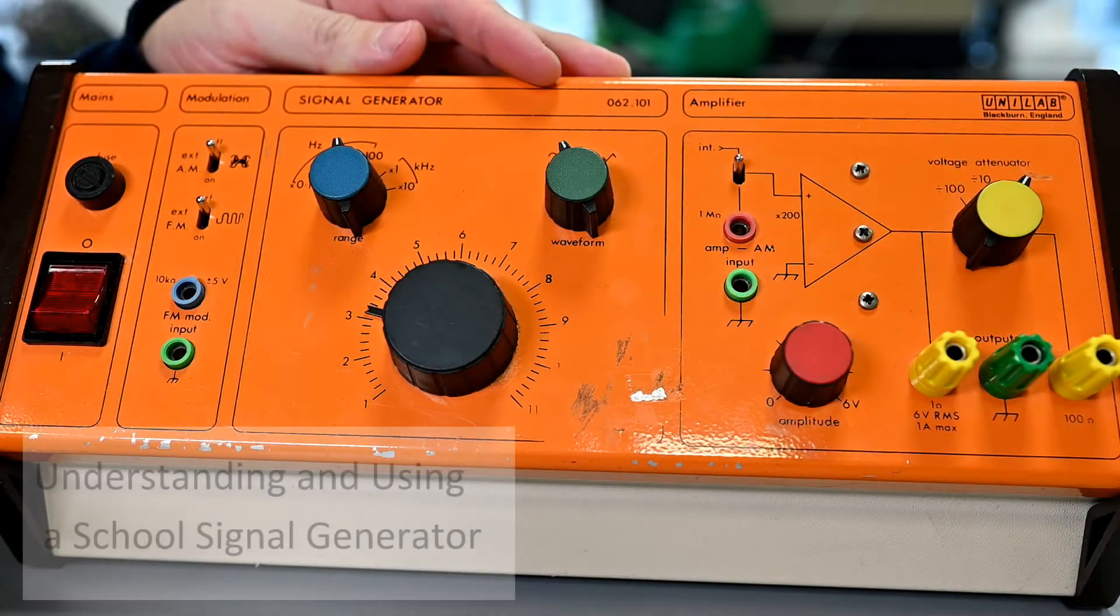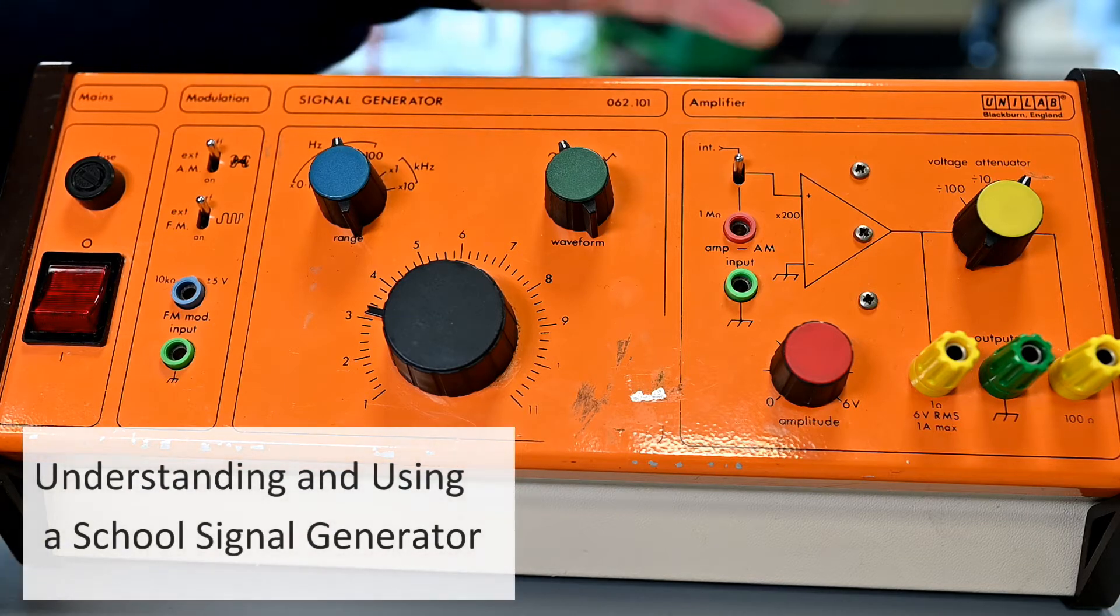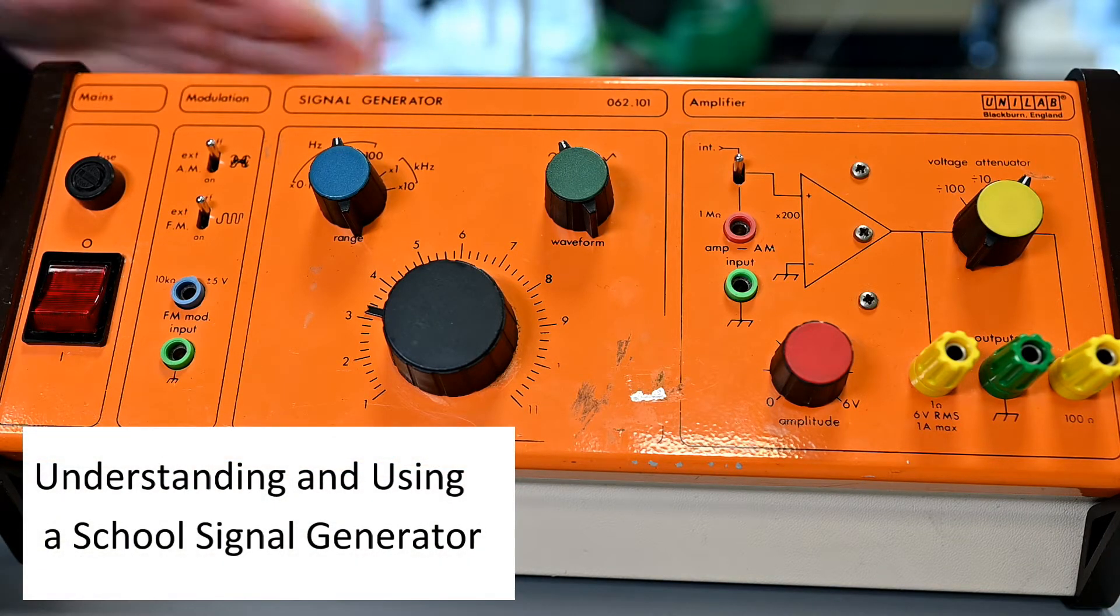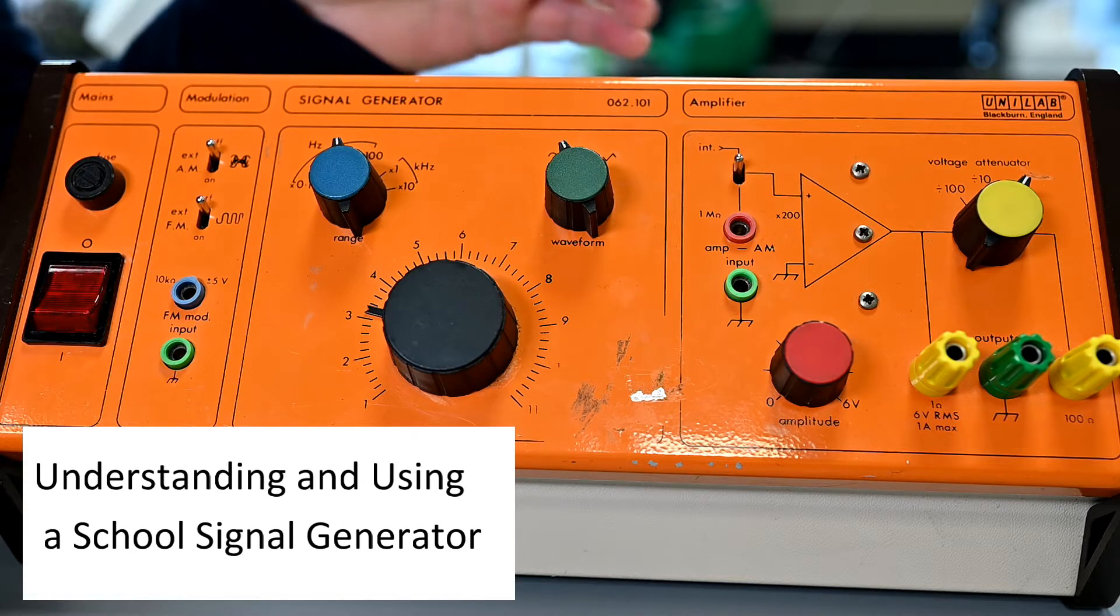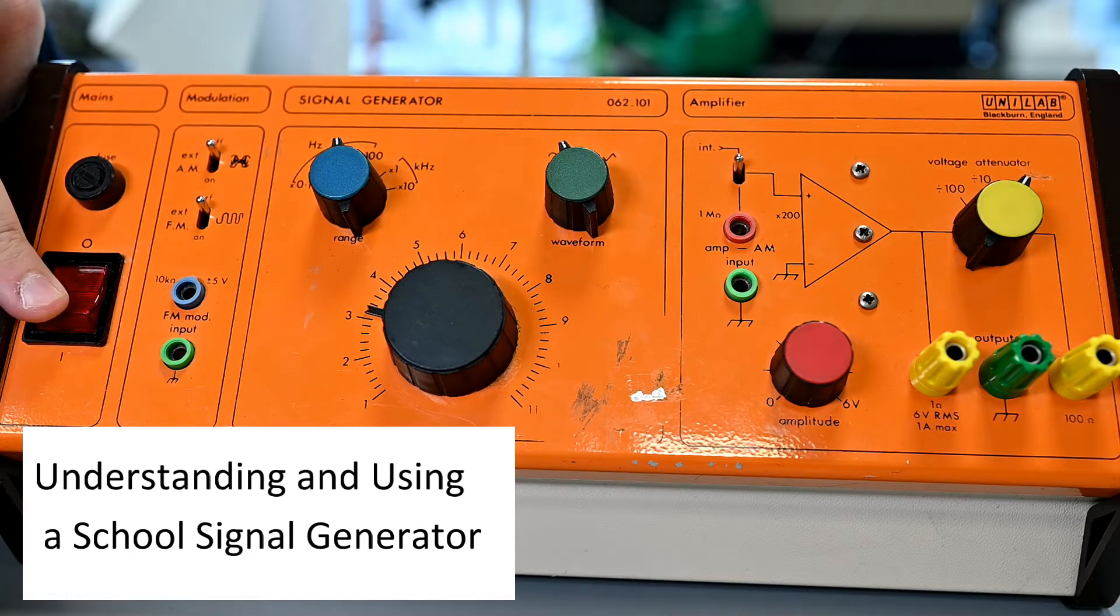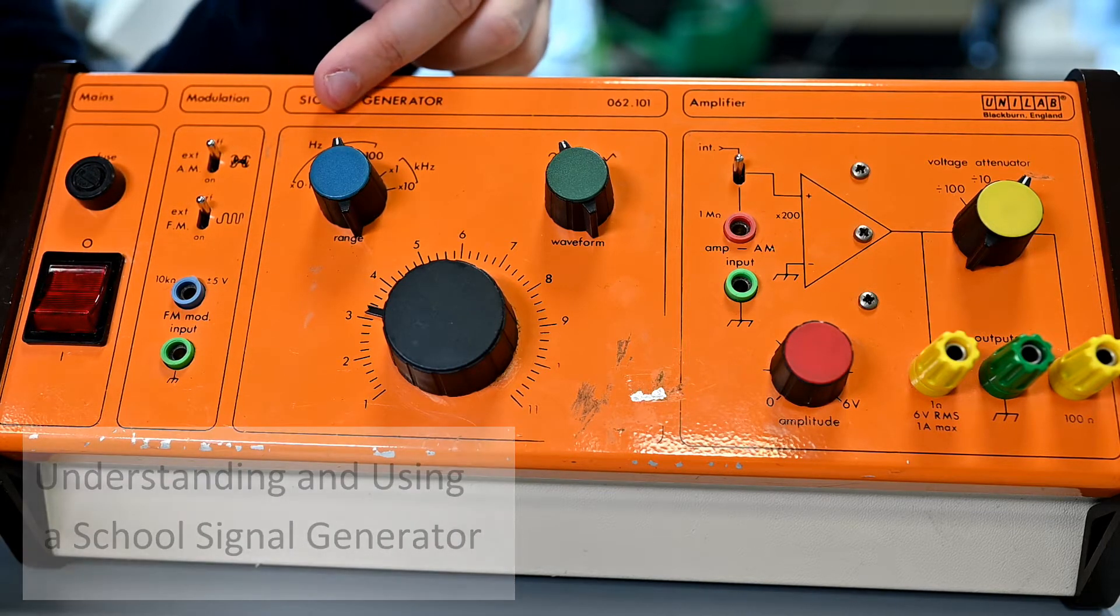Not all signal generators are the same type, but this is a common one that you find in schools. It's made by Unilab, these orange devices here. You can see there are a few dials and switches. The on-off switch is here, light means on, and we've got a frequency selector section here.